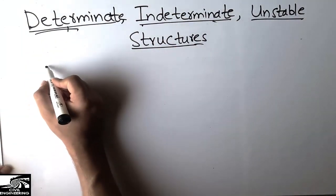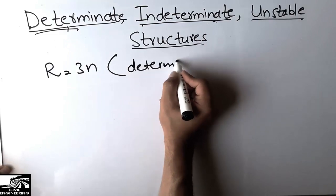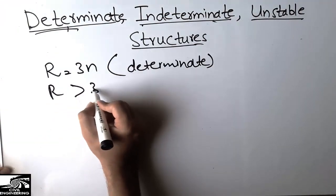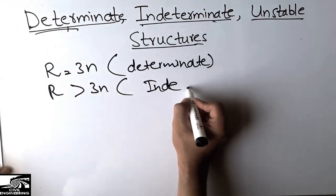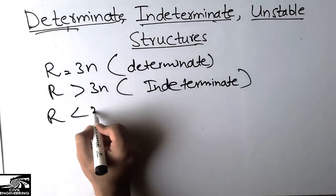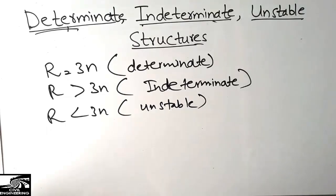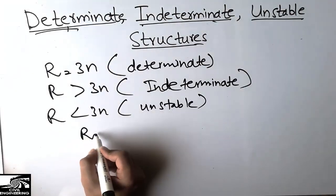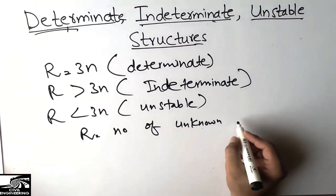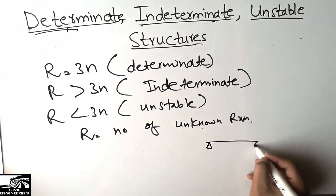The formulas are: when r = 3n, we call it a determinate structure; when r > 3n, we call it an indeterminate structure; and when r < 3n, we call it an unstable structure. Here, r is the number of unknown reactions. For example, in a beam with a pin and a roller, the unknown reactions are Rx, Ry at A, and Ry at B — that gives three unknown reactions, so r = 3.